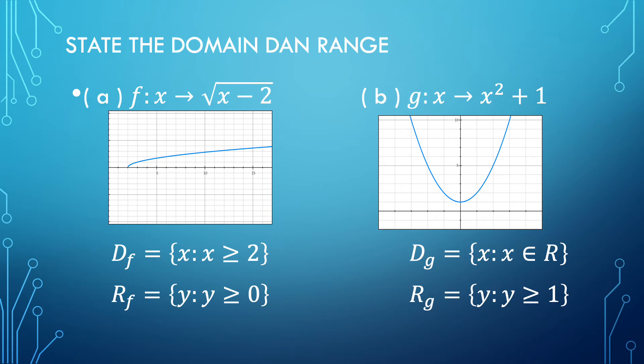When we substitute x = 2 into the function f(x), we obtain 0 for the y value. When x increases, y also increases from 0 to infinity. So the range of function f is equal to the set of y such that y ≥ 0.